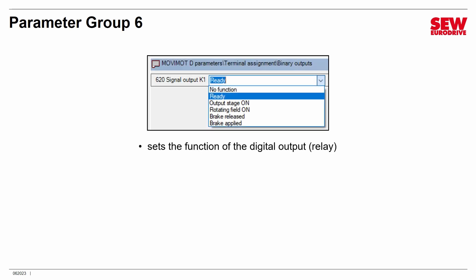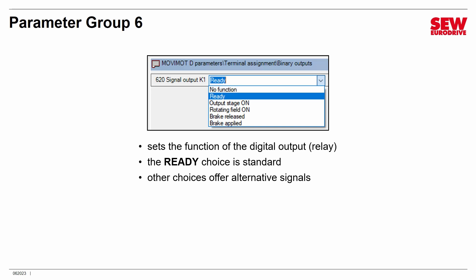There's also something handy in Parameter Group 6 — you can assign the function of the digital output, the relay contact. By default it's assigned to the ready signal indicating if the Movimot is ready to run. But you can assign it to other things: output stage on (output transistors activated), rotating field on (motor starting to turn), brake released (brake allowed motor to turn), or brake applied (brake closing to stop motor). You can assign any of these to the relay, and if that signal is true the relay will close. Alternatively, assign it to no function.